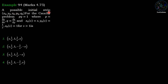Example: find a possible initial strip (x₀, y₀, z₀, p₀, q₀) for the Cauchy problem pq = 1, where p = ∂z/∂x, q = ∂z/∂y, and x₀(s) = s, y₀(s) = 1/s, z₀(s) = 1 for s > 1. The four options are: (1) s, 1/s, 1, 1/s, s; (2) s, 1/s, 1, −1/s, −s; (3) s, 1/s, 1, 1/s, −s; (4) s, 1/s, 1, −1/s, +s.